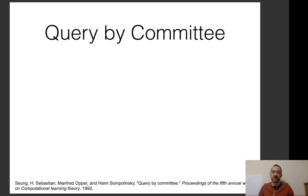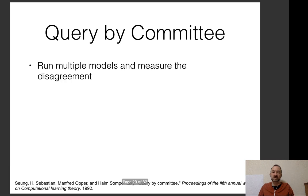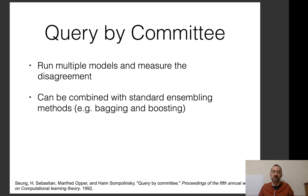The second major method is query by committee, where we run multiple models and measure disagreement between them. To get multiple models, we can train with different random seeds, train on different subsets of data, or use boosting — which trains progressively on harder parts of the data. All of these approaches boil down to creating multiple models, running them over the data, and finding data points where they disagree.